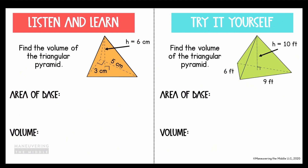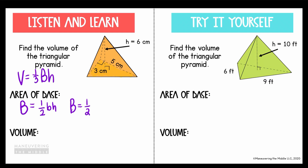The next problem asks us to find the volume of the triangular pyramid, and this is a little bit tricky because we're also talking about both the height of the pyramid and the height of the triangle. Remember that when we're finding the area of the base, we're just considering the triangle. Since the base is a triangle, I'm going to use big B equals one-half times the base of the triangle times the height of the triangle. The base of my triangle is 3 and the height of my triangle is 5, so the area of the base equals 7.5 centimeters squared.